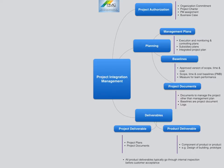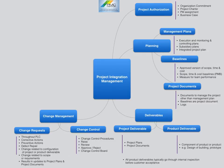All product deliverables typically go through an internal inspection or quality control before passing to the customer for final acceptance. Change management is the next key concept, guiding how to manage changes on the project. Changes can be requested by anyone who is authorized. Change requests are of three types: corrective actions to fix a problem, preventive actions to avoid future issues, and defect repair in a deliverable. Change requests can be raised through the project lifecycle and may update the project plan and project documents.